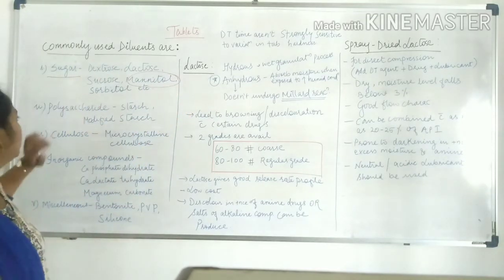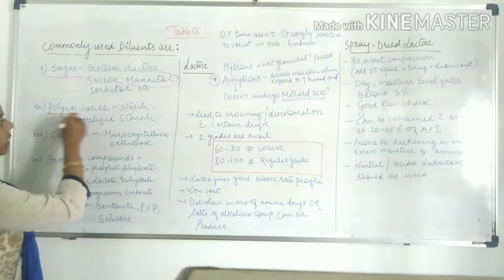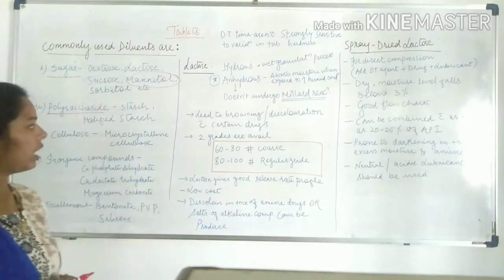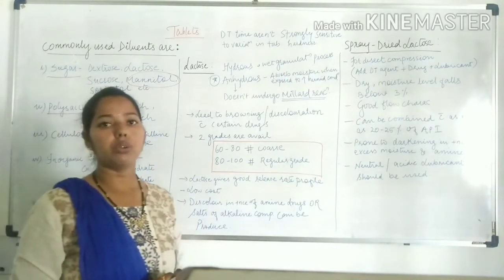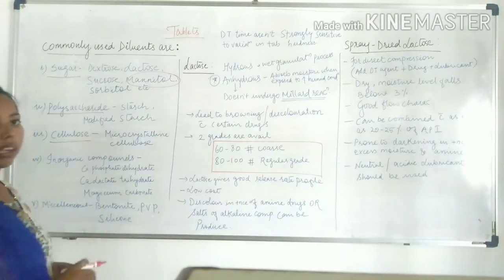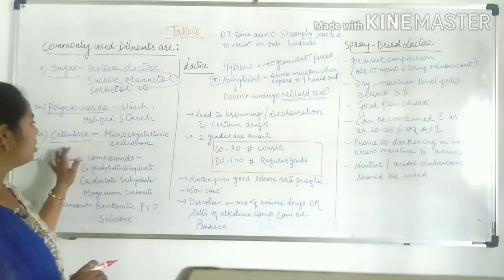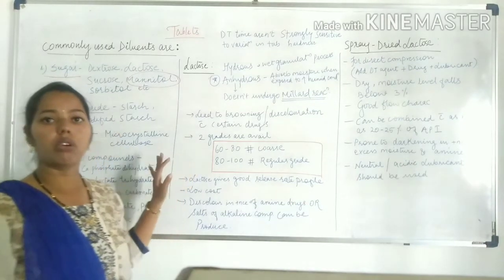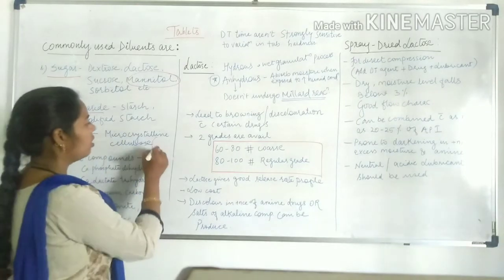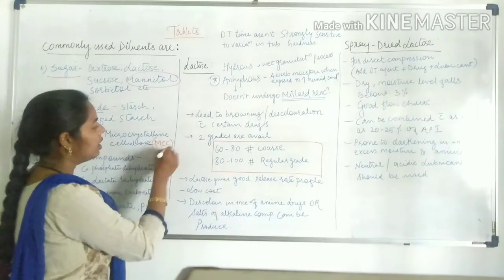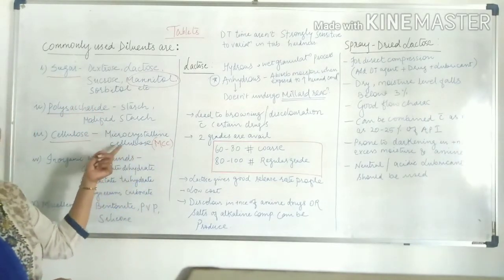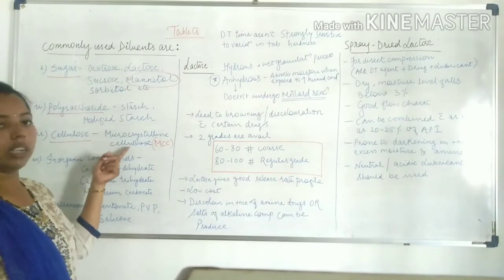After sugar-based diluents, we use polysaccharides as diluents. In polysaccharides, commonly used starch and modified starch are used as diluents. The third category is cellulose, in which microcrystalline cellulose is commonly used as a diluent. Microcrystalline cellulose is also known as MCC, and it is a cellulose derivative used as a diluent.